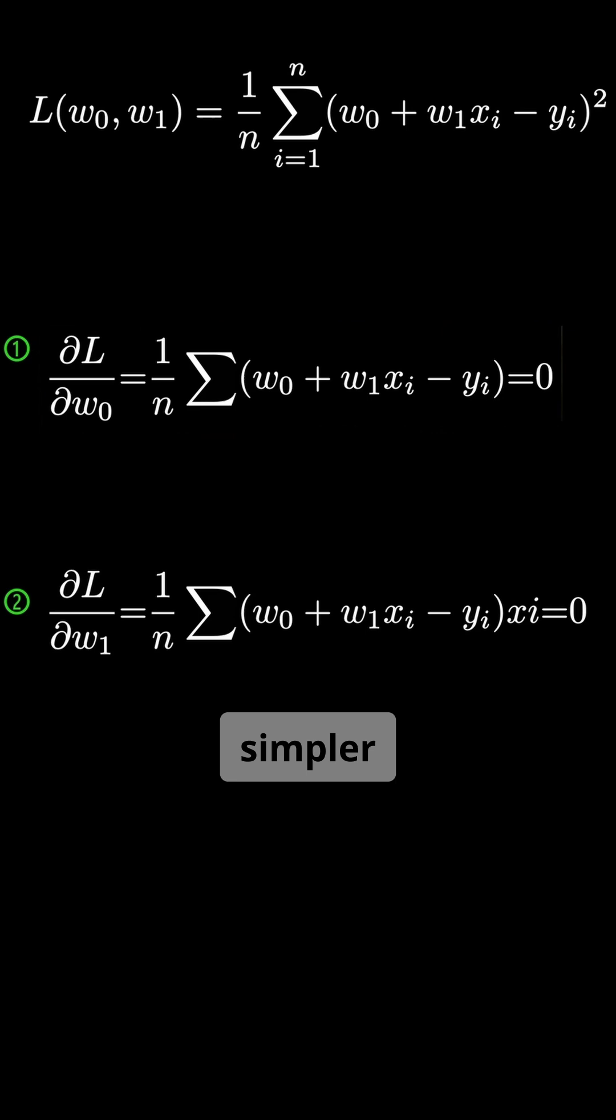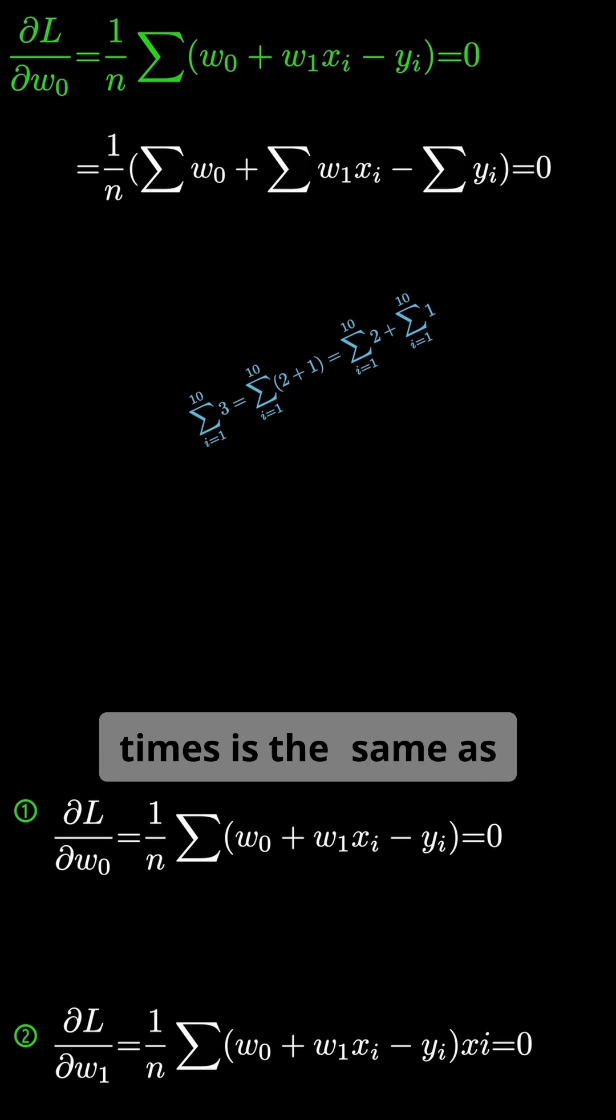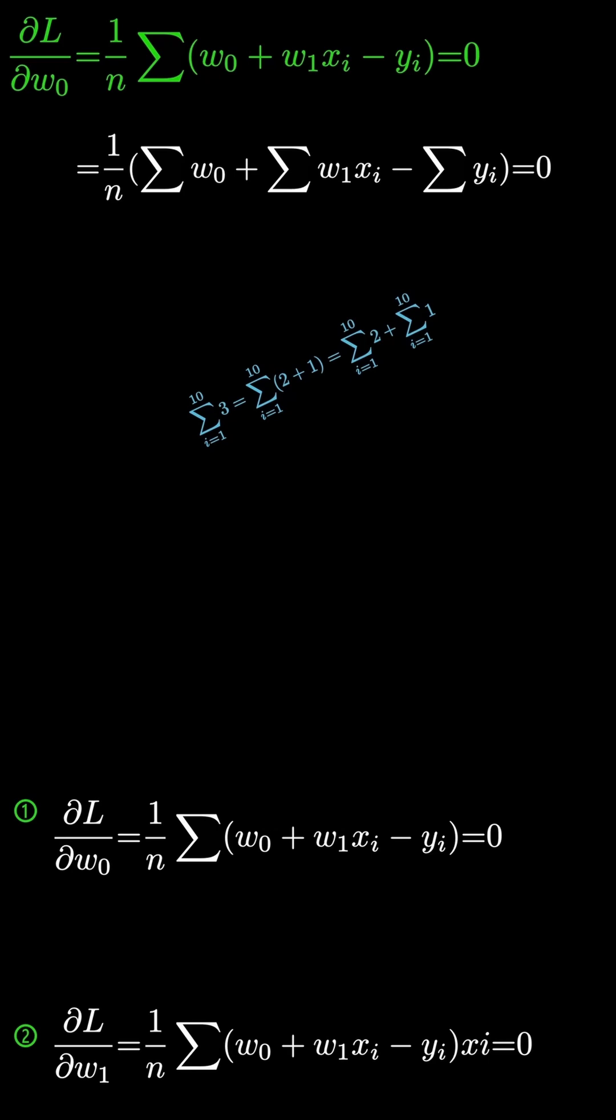Let's start with the simpler case, the partial derivative with respect to w0. We can distribute the summation over each term. Adding 3 ten times is the same as adding 1 ten times and then 2 ten times, so the distributive law holds.